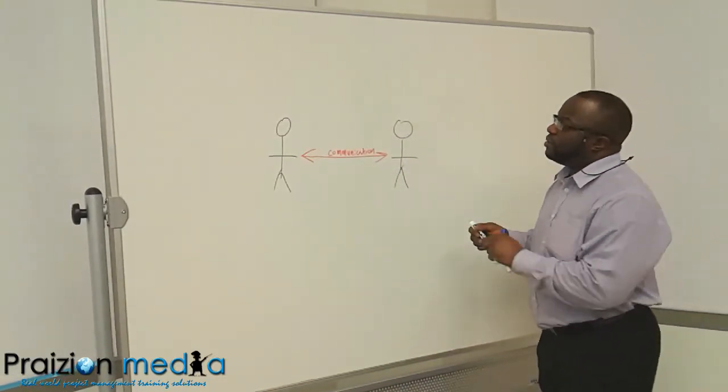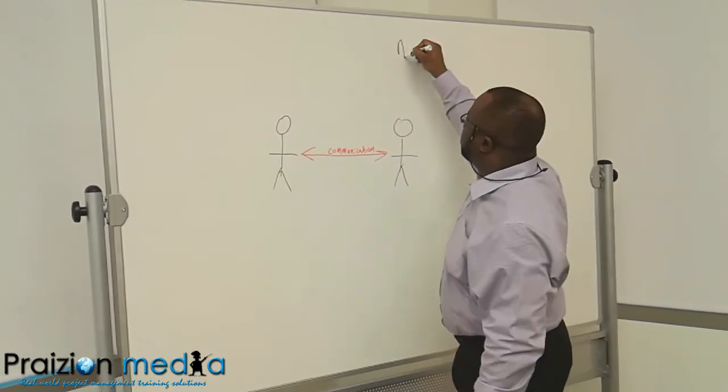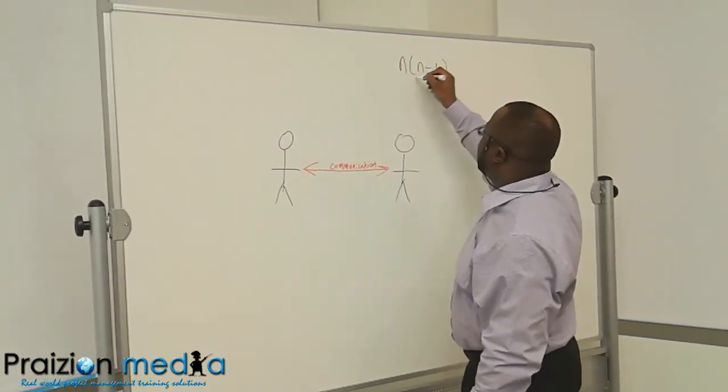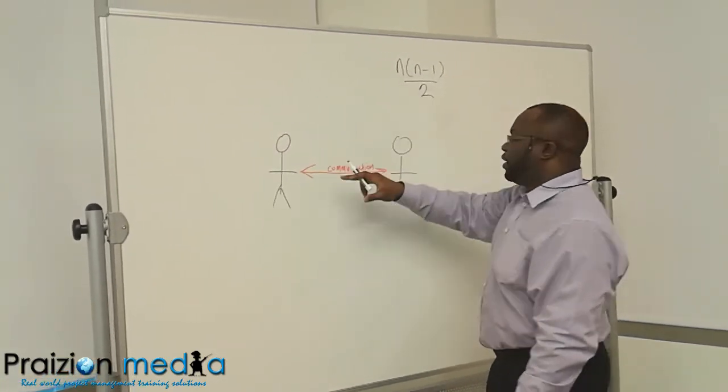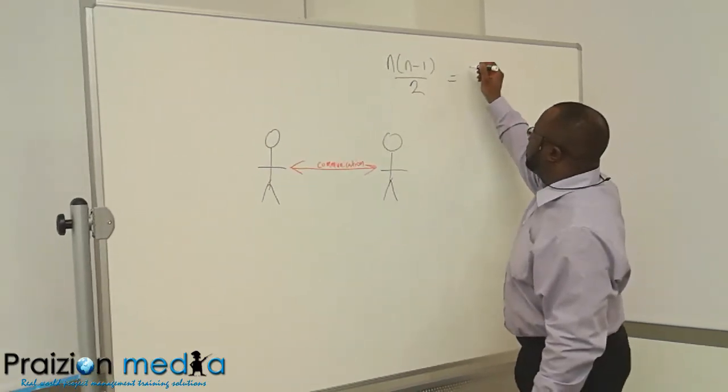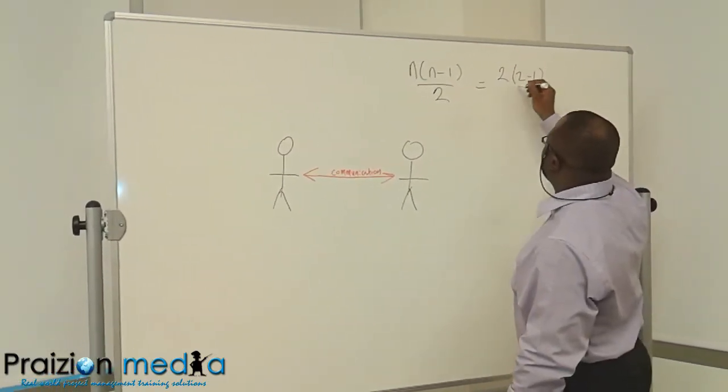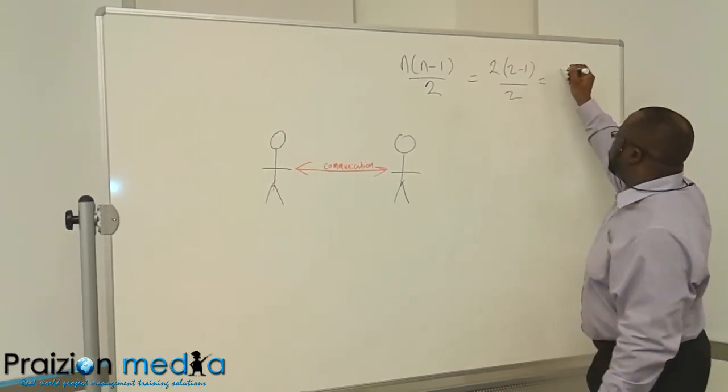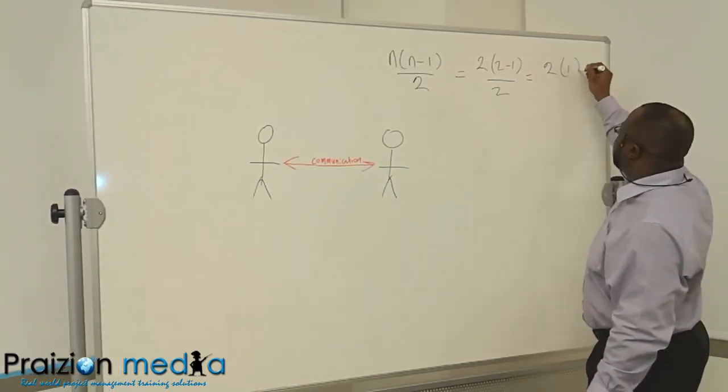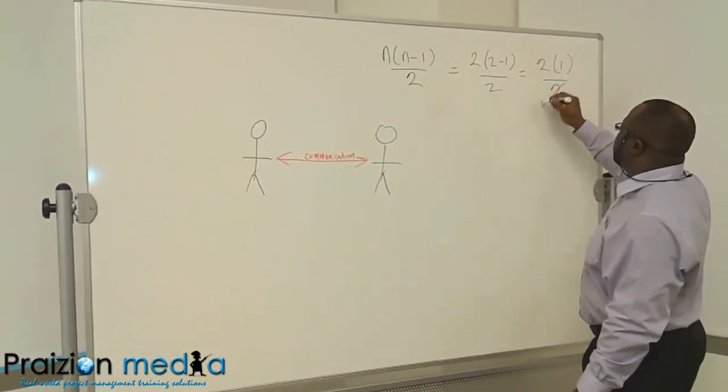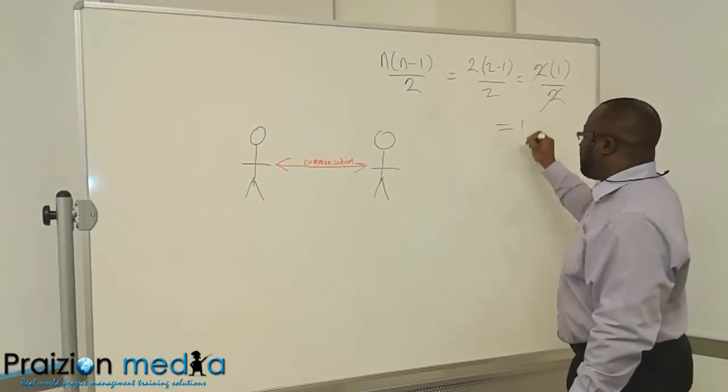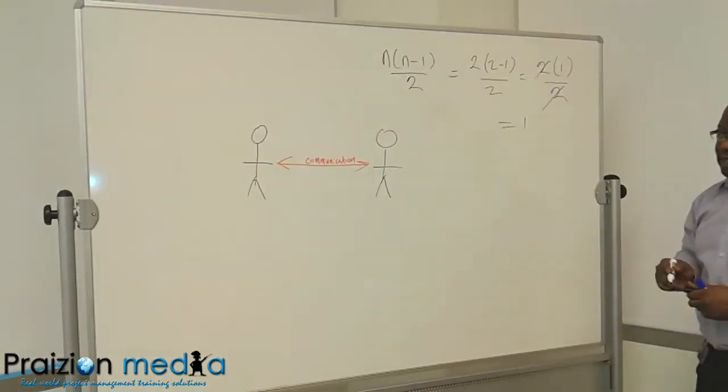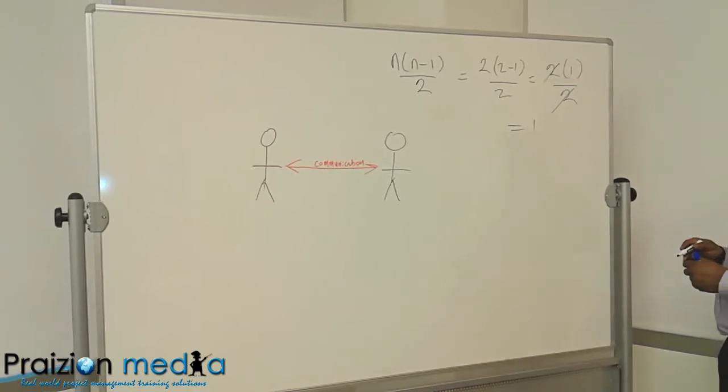The formula is N times N minus 1 divided by 2. If there are only two people communicating, you're going to have 2 times 2 minus 1 divided by 2, which is 2 times 1 divided by 2, which is equal to 1. So that's how you would tackle this in the first instance.